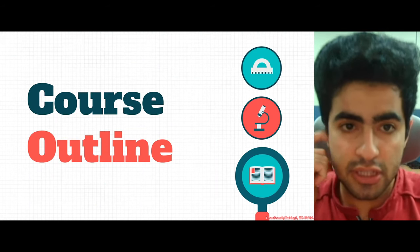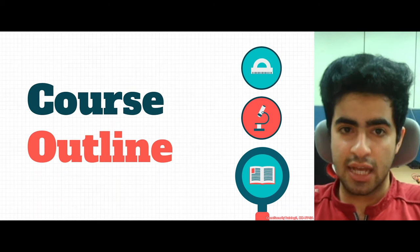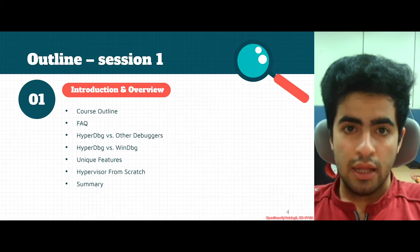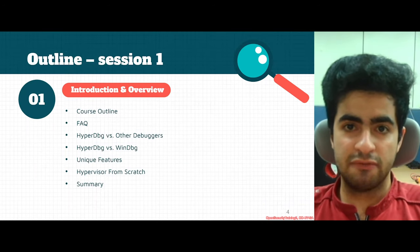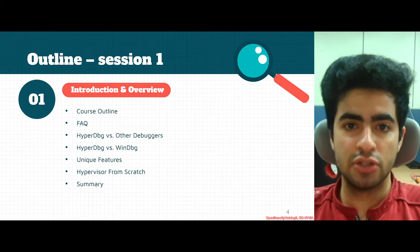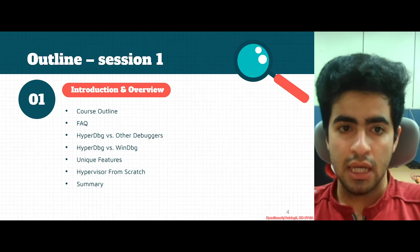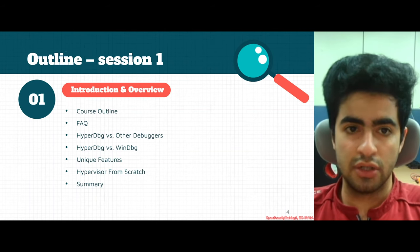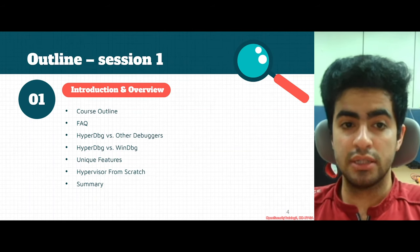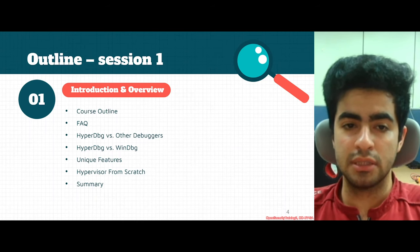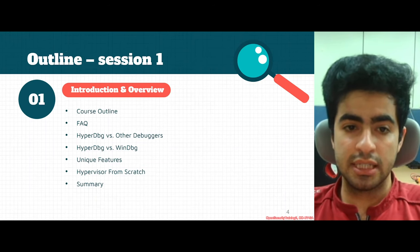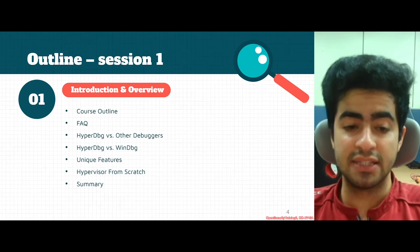This is the first part of the tutorial and we're going to see a course outline of what we'll do during this tutorial. In this first session, we have an introduction and overview of the debugger. We'll see the outline of different sessions, some frequently asked questions, compare HyperDBG with other debuggers, see its unique features, introduce hypervisor from scratch, and finally a summary.